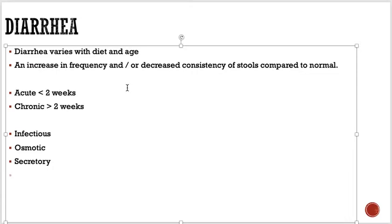There is also secretory diarrhea — for example, in cholera there is excessive secretion going on in the GIT. Or it could be malabsorption, like celiac disease where the GIT cannot absorb properly, or short bowel syndrome. There are many examples for this.